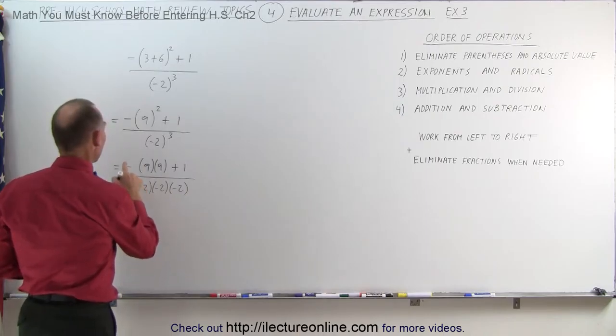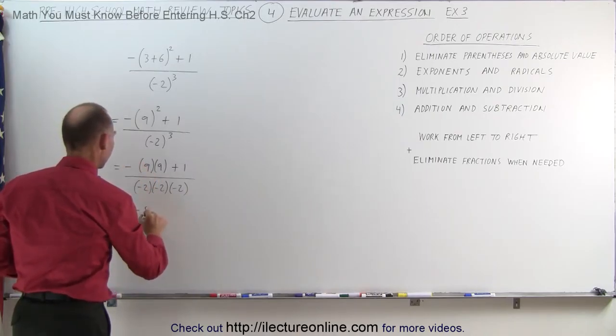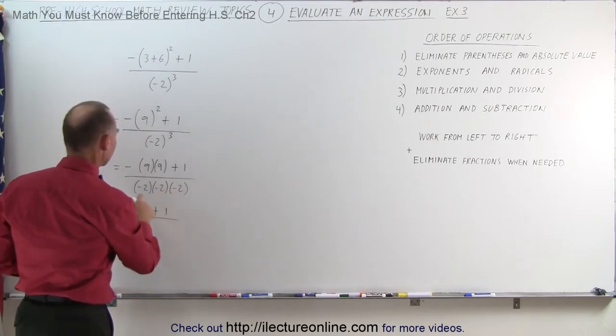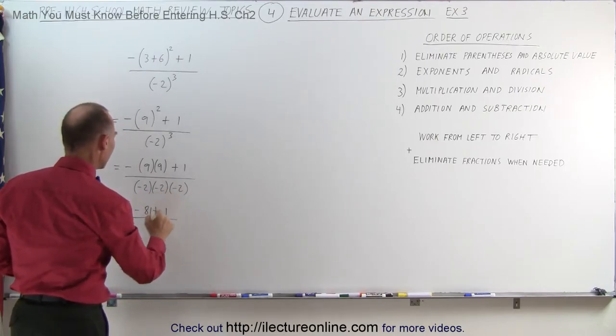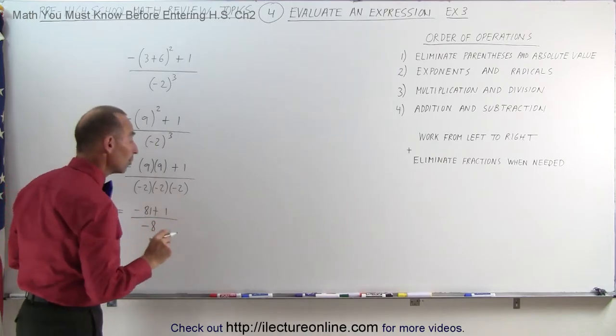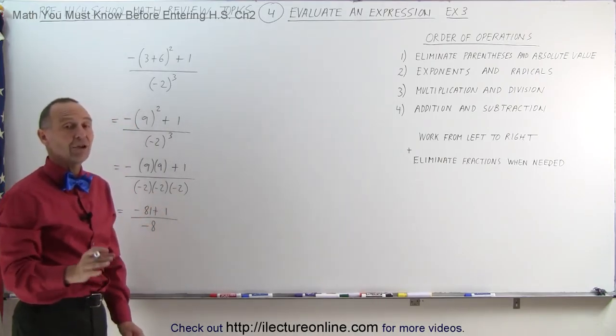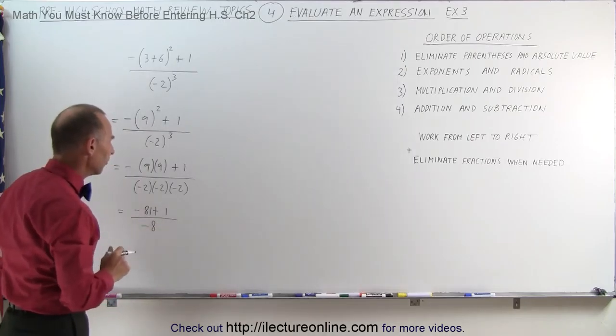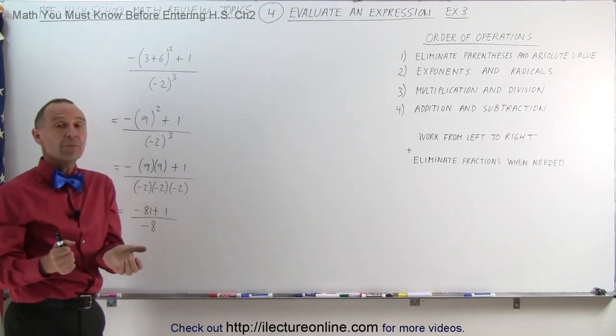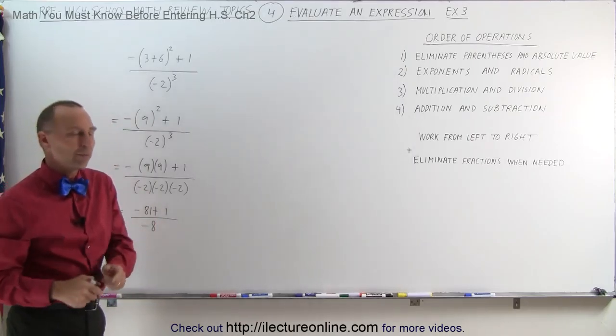So this becomes equal to negative 81 plus 1 divided by negative 2 times negative 2 times negative 2, which is negative 8. When you multiply three negative numbers together, that's an odd number of negatives, your answer will be negative. When you multiply an even number of negatives together, then the answer will be positive.